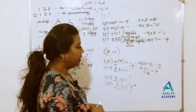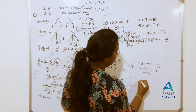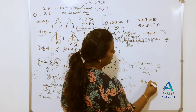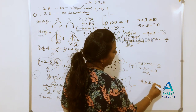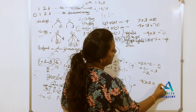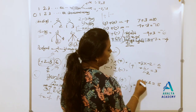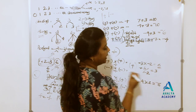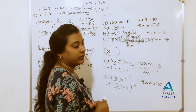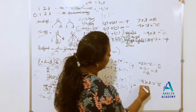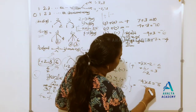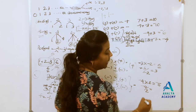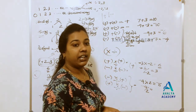We multiply minus 4 by minus 2, that means 4 times 2 equals 8. And minus times minus is equal to plus. We multiply minus 4 by 2; if we divide minus 4 by 2, we get minus.